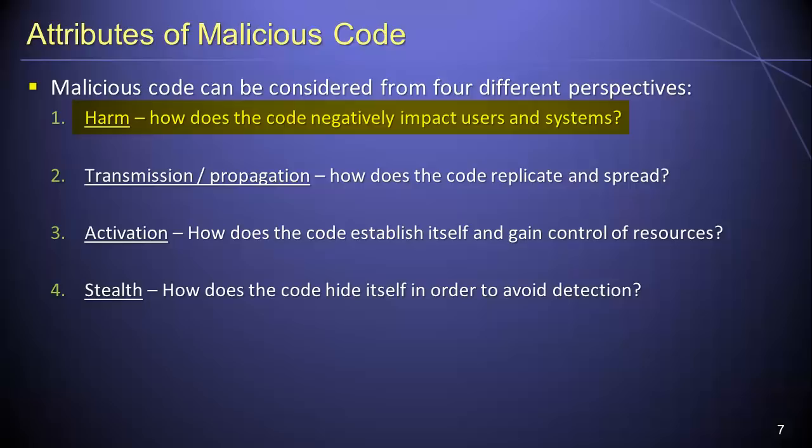Second, we can consider the way in which a malware program transmits or propagates itself, and we can accomplish this by determining how the program replicates and spreads. Malicious programs can potentially transmit and propagate themselves in many different ways, including via files, downloads, documents, scripts, networks, and so forth.